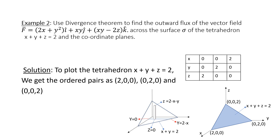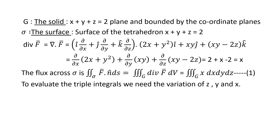The solid given here is the region bounded by the plane x + y + z = 2 and the coordinate planes x = 0, y = 0, z = 0 — that is the tetrahedron. The surface sigma is the surface of the tetrahedron x + y + z = 2.